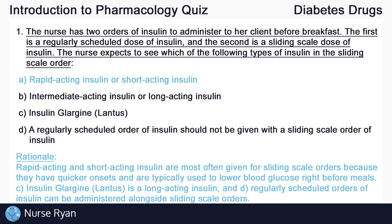The answer here is A, rapid acting insulin or short acting insulin. Rapid acting and short acting insulin are most often given for sliding scale orders because they have quicker onsets and are typically used to lower blood glucose right before meals.